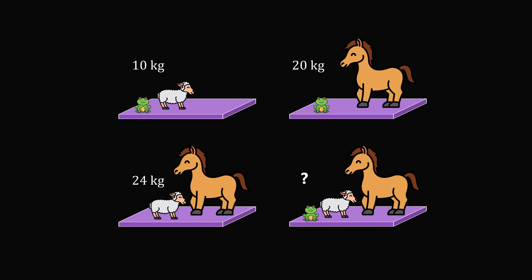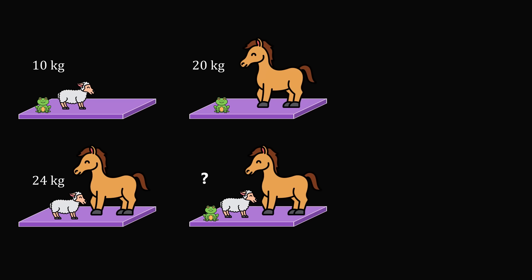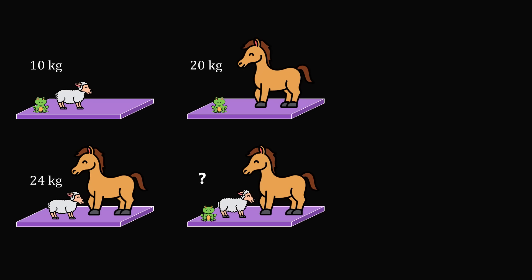Let's go through this puzzle step by step. Let's get started by setting up some algebraic equations. Let F be the weight of the frog, S be the weight of the sheep, and H be the weight of a horse.